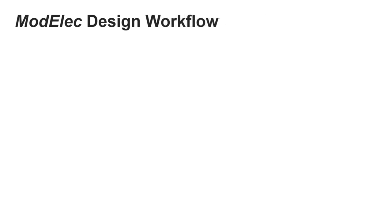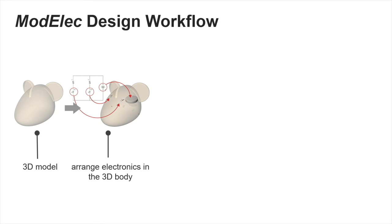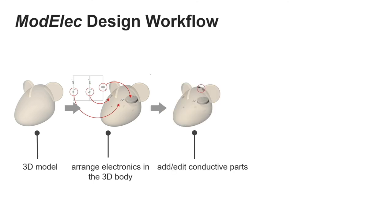Let's see the overall workflow of this tool. First, the user needs to create a 3D model in Rhino. Then the user needs to import a schematic of the circuit so that the model can understand what kind of electronics can be imported. The user can then arrange each individual component in the 3D model, and also assign 3D printable, highly conductive parts which will be printed by our 3D printer.